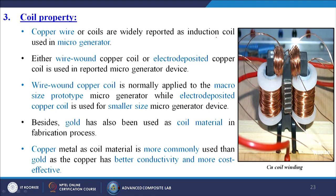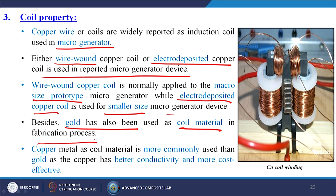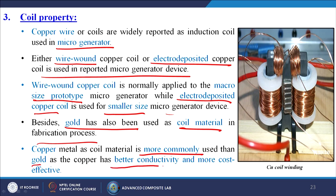The coil property: copper wire or coils are widely reported as induction coils used in micro-generators. Either wire-wound copper coil or electro-deposited copper coil is used. Wire-wound copper coil is normally applied to macro-size prototype micro-generators, while electro-deposited copper coil is used for smaller size micro-generator devices. Gold has also been used as coil material in fabrication processes, but only for high-end equipment due to its high cost. Copper is more commonly used than gold as it has better conductivity and is more cost effective.